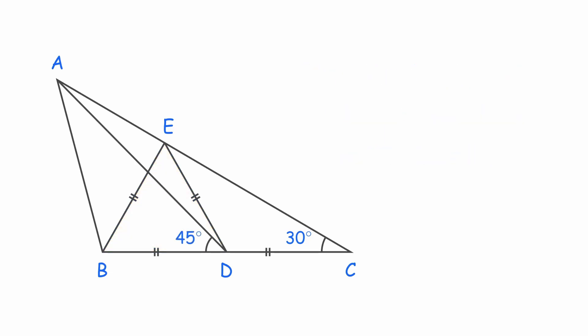Now, bring back line AD and focus on triangle AED. We know angle EDB is 60 degrees and angle ADB is 45 degrees. So angle EDA equals 15 degrees. Since angle ADB also equals the sum of interior angles CAD and ACD, that gives angle CAD equals 15 degrees as well.